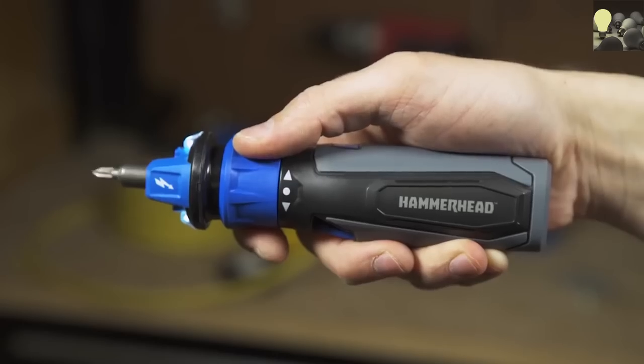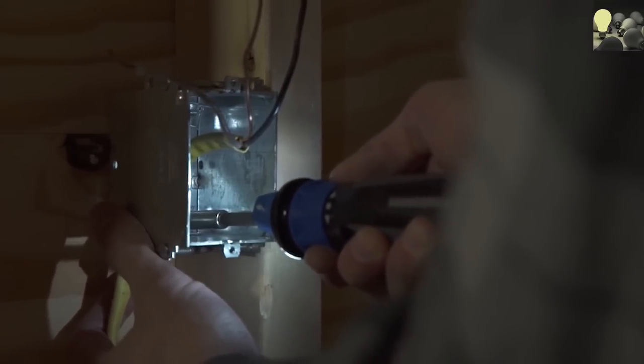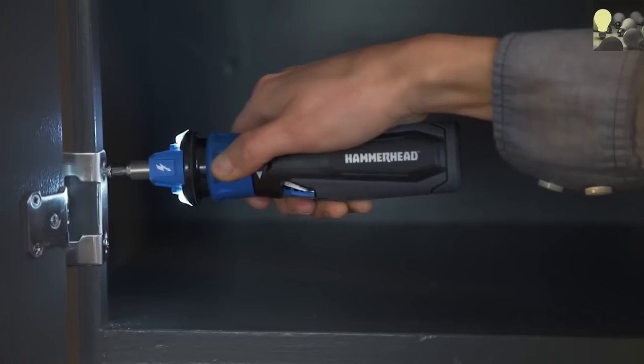The Hammerhead 4V rechargeable screwdriver has a forward reverse ring that activates with a simple twist. Once activated, the LED lights turn on, illuminating your work. When not in use, the spindle locks and can be used like a manual screwdriver.